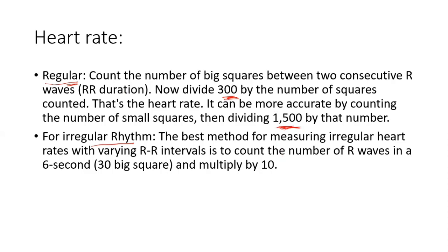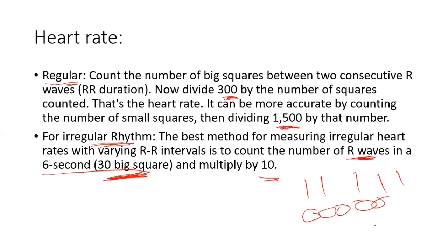If the rhythm is irregular, the RR interval varies, so a different method is used. Count the R waves in a 6-second strip, which is 30 large boxes, then multiply by 10 to get the heart rate.